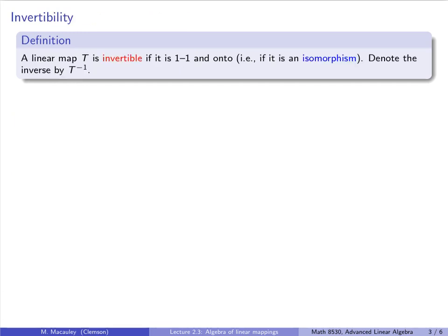Since a linear map is a function, it is invertible if it is one-to-one and onto. In the setting of linear maps, this is equivalent to it being an isomorphism. We denote the inverse by t to the minus one.